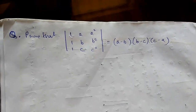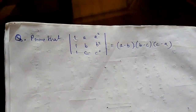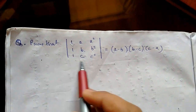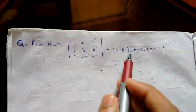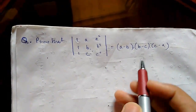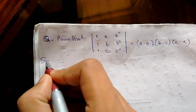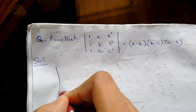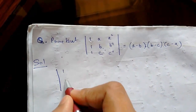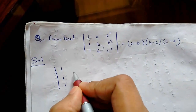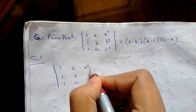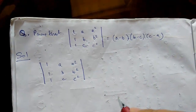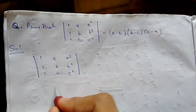Hi guys, today we will be seeing some problems on determinants. This is our first problem — we need to prove this determinant. Let us start with the solution. First, I'm writing the left-hand side: 1 1 1 / a b c / a² b² c².